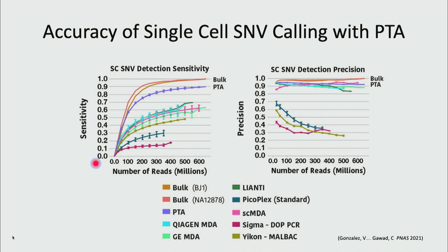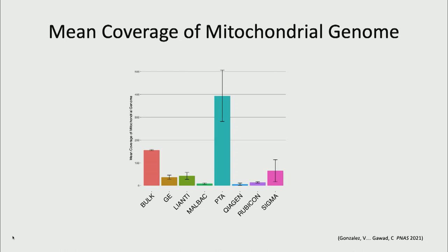With PTA, looking at sensitivity of variants across the entire genome, we're detecting about 90 percent — the next best is in the 60s to 70s. For precision, we were similar to MDA, and we've subsequently made improvements to the protocol to increase precision further. A final technical feature: with PTA, slowing down the reaction allows smaller templates to amplify more efficiently relative to the autosomes. So with the same amount of sequencing — just a few million reads — we get really high coverage of the mitochondrial genome compared to MDA.